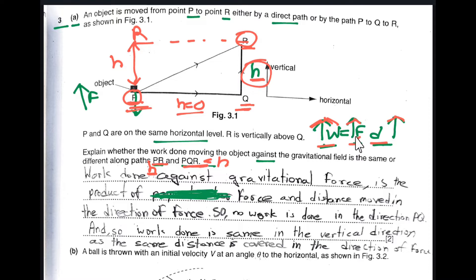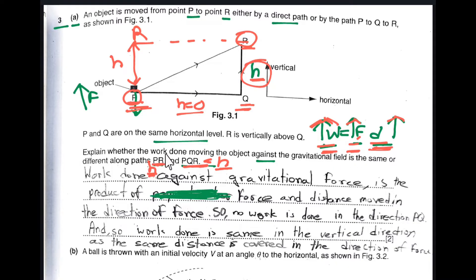Work done is the product of force and the vertical distance, since both force and distance are vertical. From path PR and from path PQR, the vertical distance is the same — that is H. Since the vertical distance is the same, the force is the same, and therefore the work done is the same for both paths.